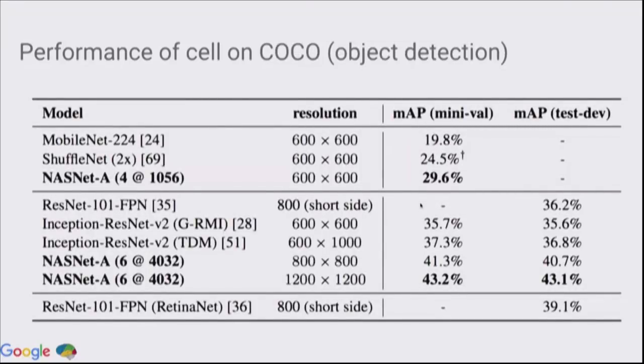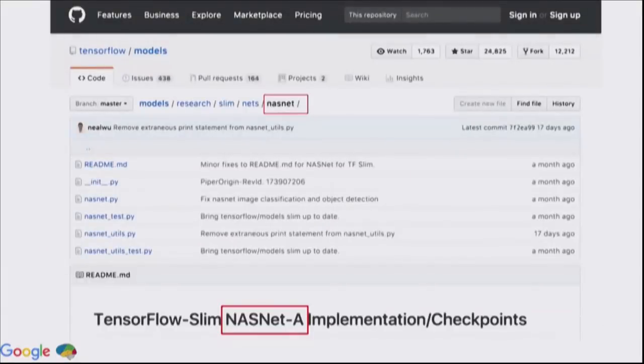We also transferred the architectures that we found to the dataset called the COCO dataset. This is another holy grail dataset in computer vision for object detection. At the time when we applied it, the state-of-the-art is around 39% using a complicated loss function, and we didn't use it. But the NASNet model that we found was able to achieve 4% better than the state-of-the-art. And 4% better in mean average precision is a huge improvement in accuracy of this model.